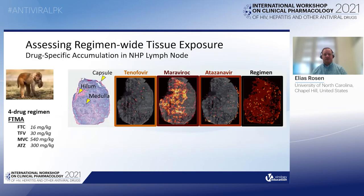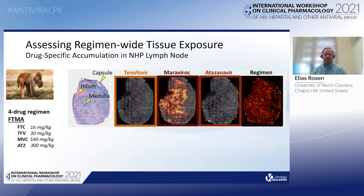There are several facets of drug exposure that can be explored with IR-MALDESI, which I'll explain in the context of penetration to non-human primate lymph node. For an animal on a four-drug regimen consisting of emtricitabine, tenofovir, maraviroc, and atazanavir, MSI shows drug-specific accumulation for the three drugs detected within a lymph node cryosection. Tenofovir response is diffuse across the tissue, maraviroc shows accumulation preferentially in medullary spaces, while atazanavir shows higher accumulation in the lymph node capsule. These separate distributions, collected simultaneously, can be combined to assess the regimen as a whole.